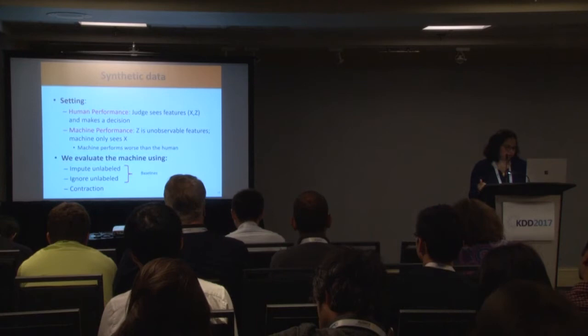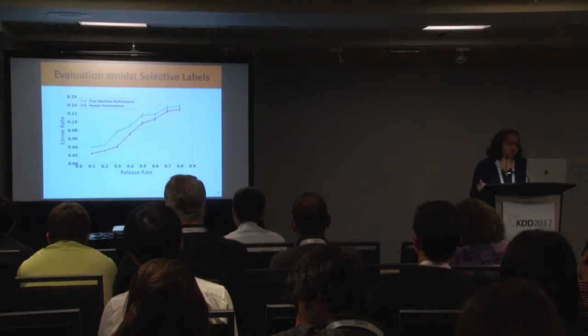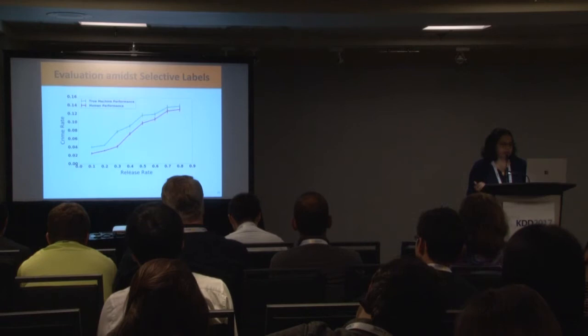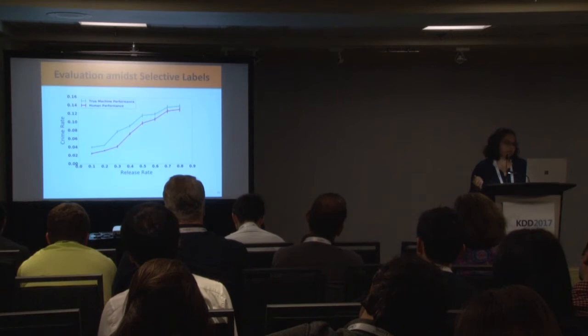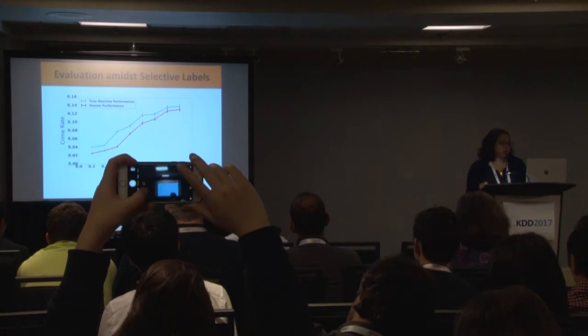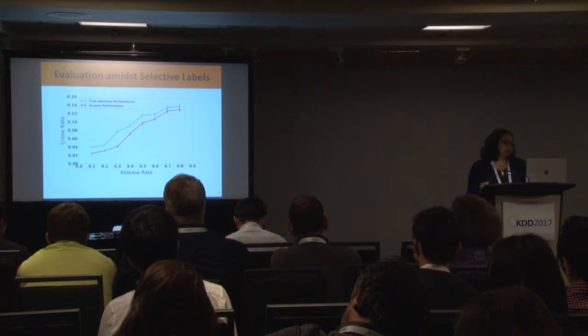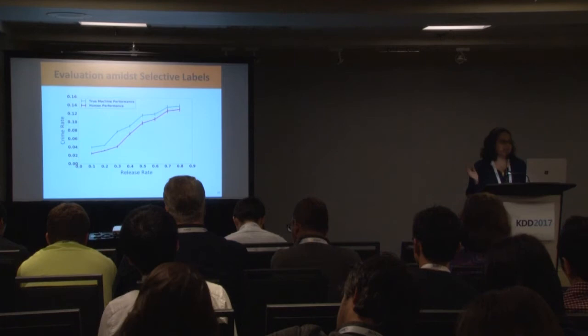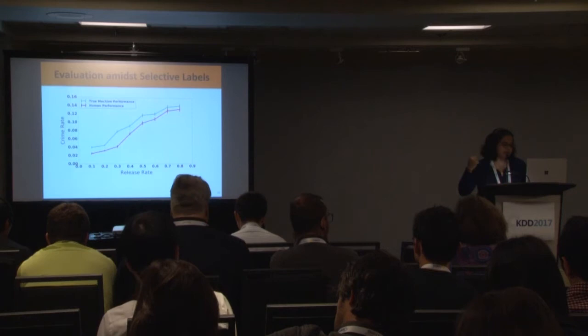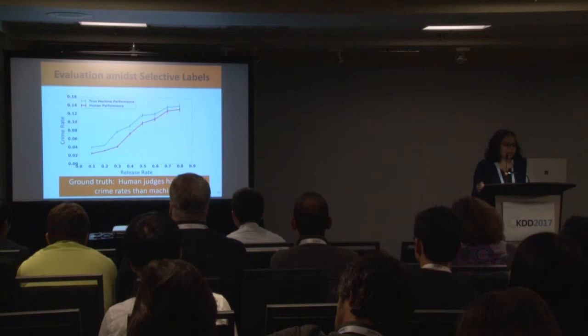On the x-axis, we plot the release rate — the fraction of people being released by either the machine or human judge. The y-axis is the crime rate — what fraction of those released are actually committing crimes. The green curve is the true machine performance and the red is the true human performance. Because we see everything in synthetic data, we can confirm that the machine is performing worse — crime rates are higher — and human judges have lower crime rates and are performing better.